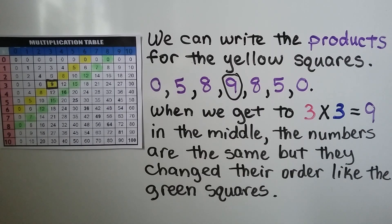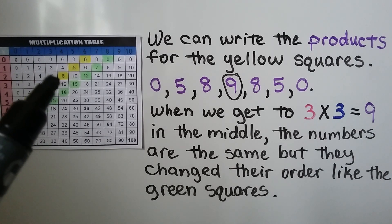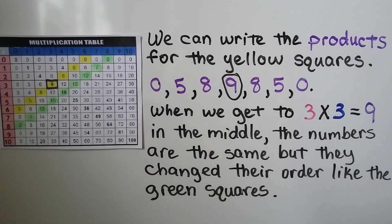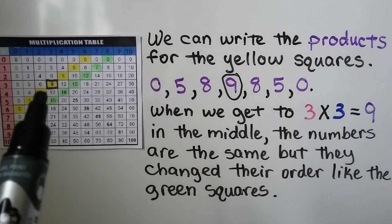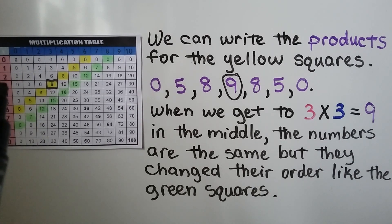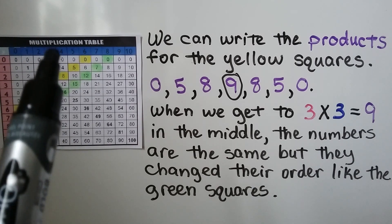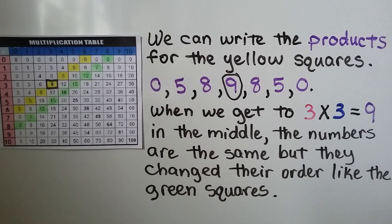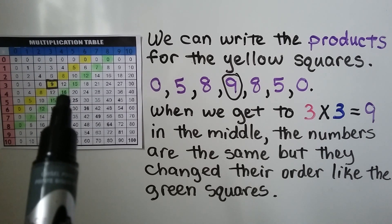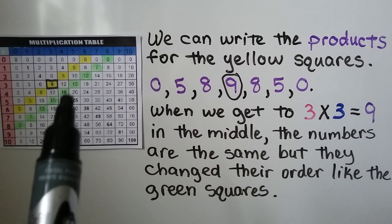We can write the products for the yellow squares: 0, 5, 8, 9, 8, 5, 0. See the pattern? When we get to 3 times 3 equals 9 in the middle, the numbers are the same but they change their order, just like the green squares changed their order when we got to 4 times 4.